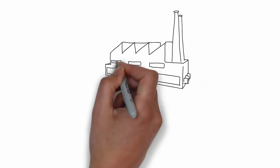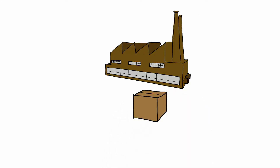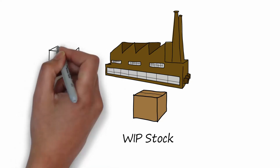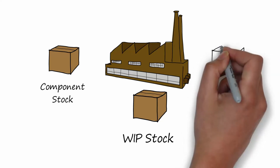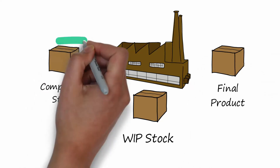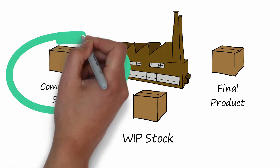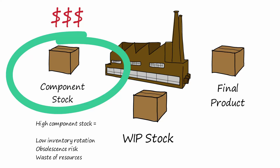In every production plant, our production people ask for components to produce. Each production process asks the predecessor for the right component at the right time. This means we have some work-in-progress stock, some components stock to be transformed into work-in-progress, and finally into the final product our customer is asking for. In this presentation, we are going to have a look at the components stock. Components stock means dollars of material waiting to be transformed into income for the company. A high component stock level means low inventory rotation, obsolescence risk, and also a waste of resources.